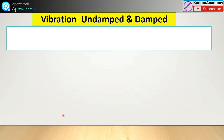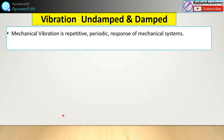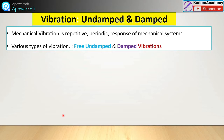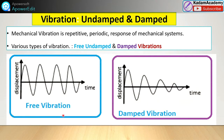First, we will learn the difference between undamped and damped vibrations. Mechanical vibration is the repetitive or periodic response of mechanical or vibratory systems. For various types of vibration, we compare the free undamped and damped vibration from their response curves. For free undamped vibration, the response curve continuously oscillates in both directions with the same amplitude.